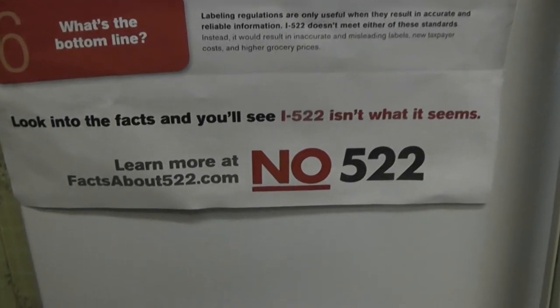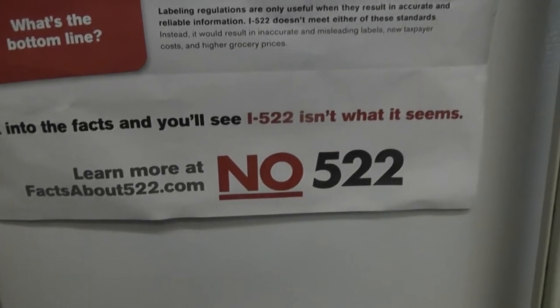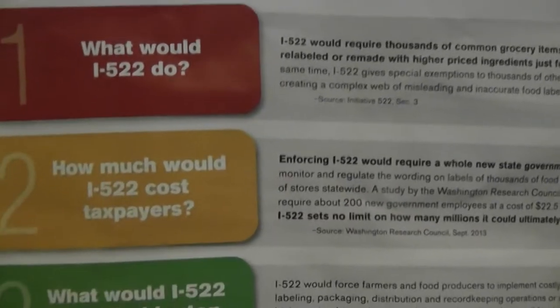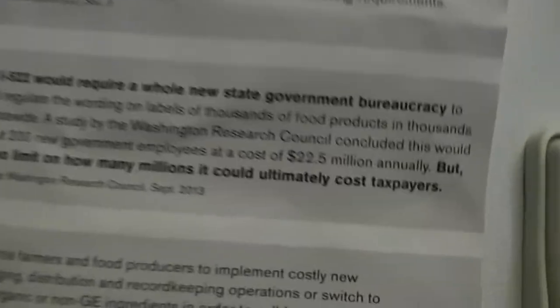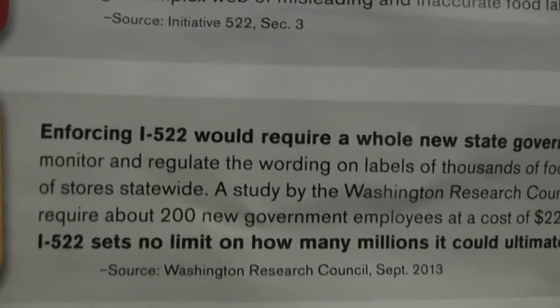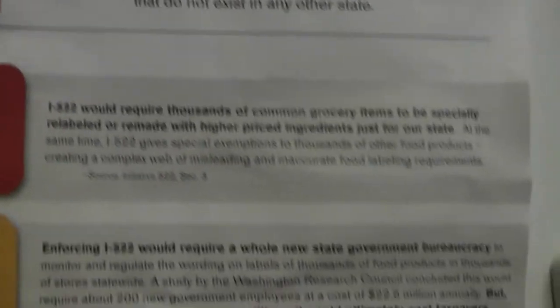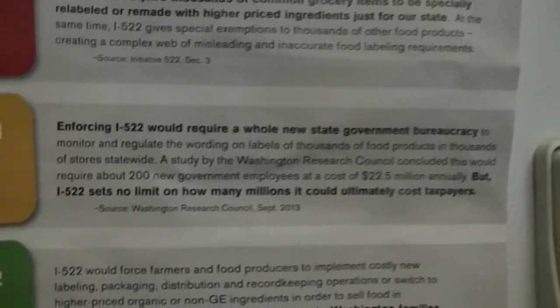Hey guys, we got this flyer that says 'Say No to I-522, it isn't what it seems.' According to them, it would cost the taxpayers. Now, to let you know what I-522 is, it's the labeling of GMO foods here in Washington State, which we've tried to do before.